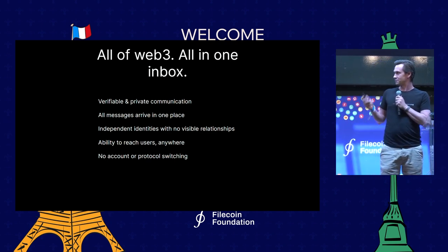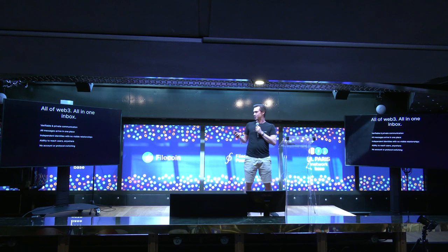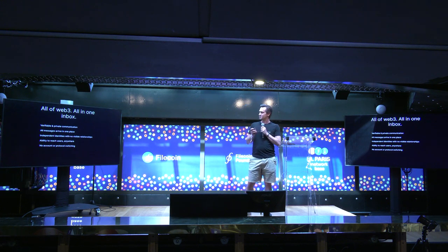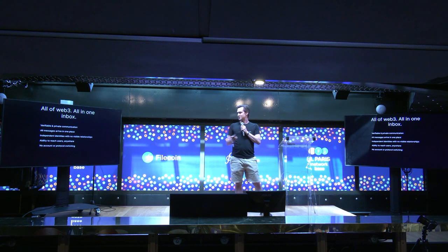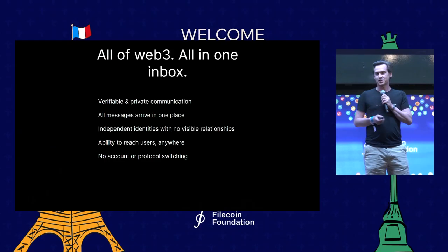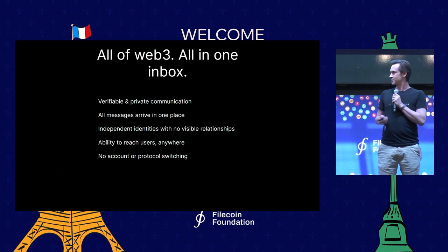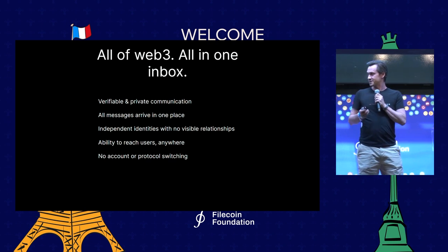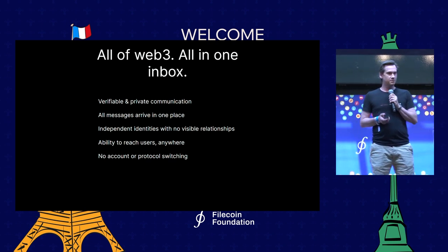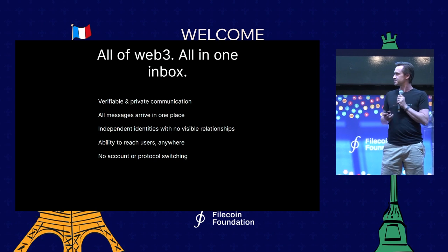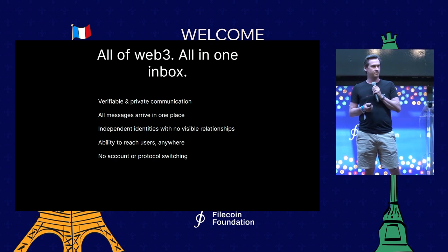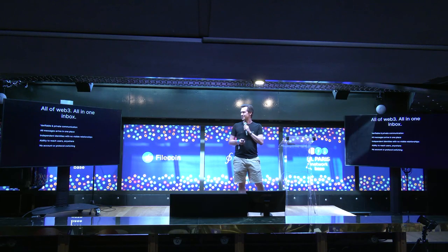The main features of MailChain are verifiable and private communication. We work in Web3 only — we don't support traditional email — because we can verify that a sender is actually the sender and that the communication remains encrypted end-to-end. People can register multiple addresses all into one place, and any registered identities all sit in your unified inbox, and the only person who can tell that those identities are in there is you.